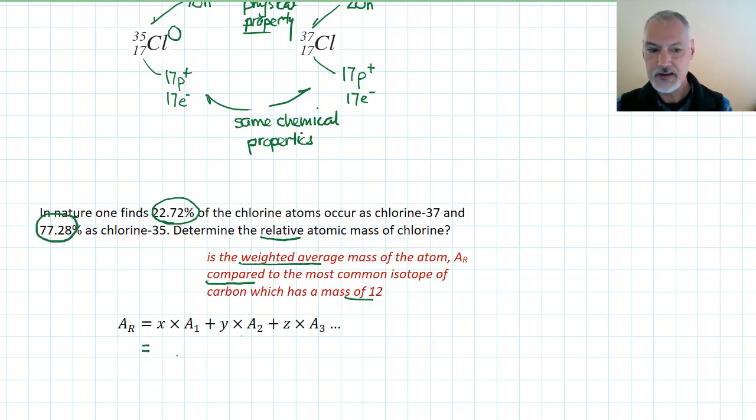So in this particular case, here's how I go about that. 22% of the time I change that into a fraction or a decimal, so 0.2272. And I'm going to multiply it by what that one weighs, which is chlorine 37. That's its mass number. And then I'm going to add to it the other 77% of the time that it has a mass of 35. And multiplying that out to two decimal places in my answer gives me an answer of 35.45.